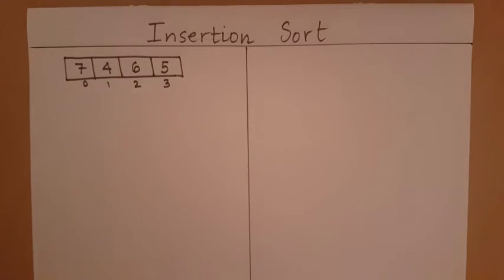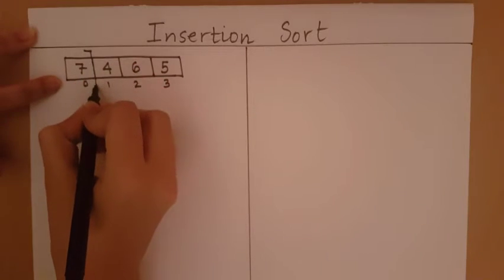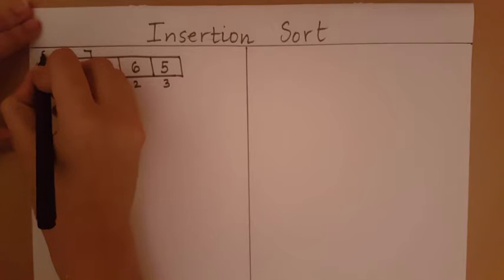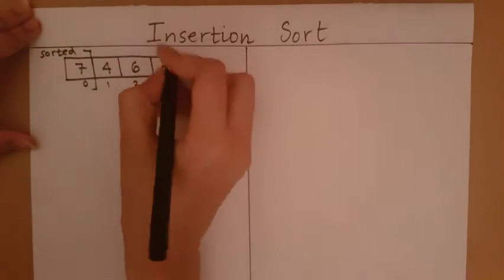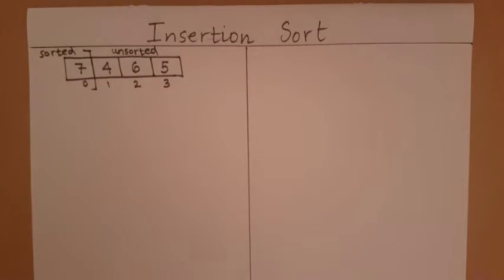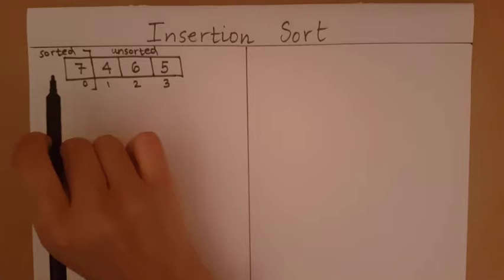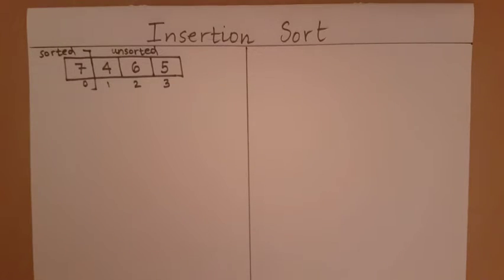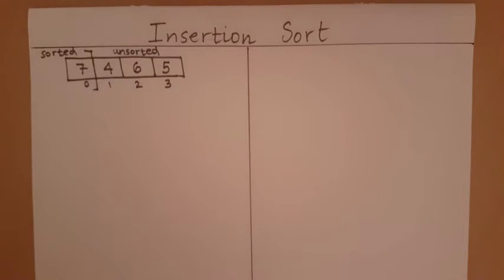This is the unsorted array that will be given to us. What insertion sort does is consider part of the array as a sorted sub-array and part as an unsorted sub-array. In the very beginning, it considers just the first element as the sorted part, and all other elements as the unsorted part. Since a single element array is always sorted, we start with only one element.